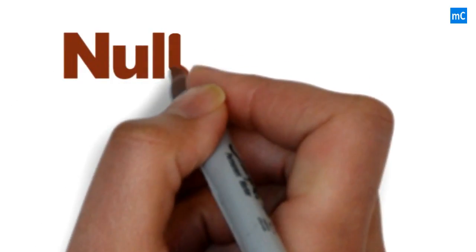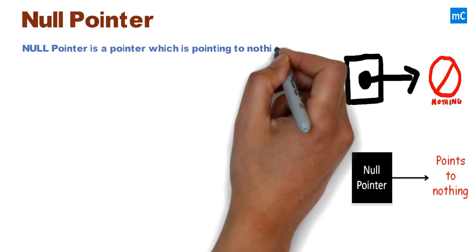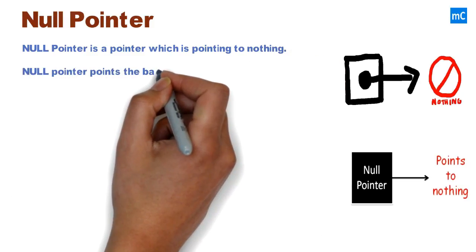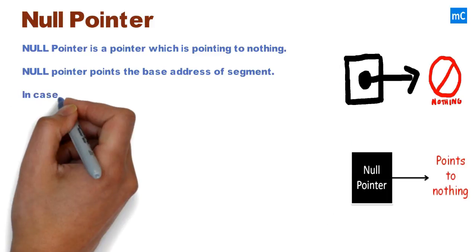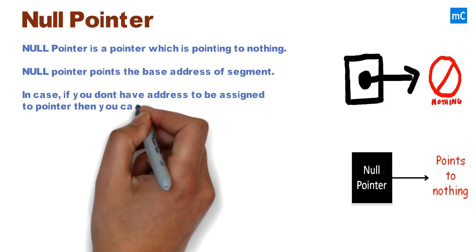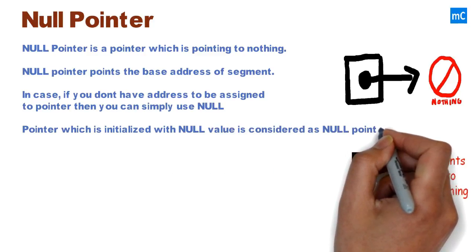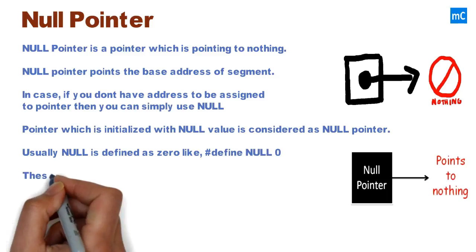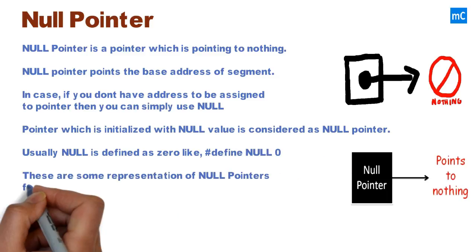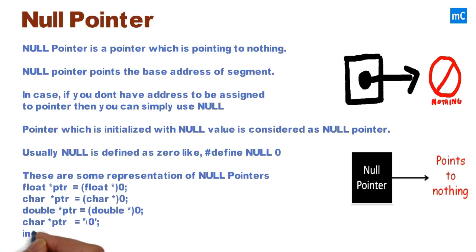First we will see null pointer. A null pointer is a pointer which is pointing to nothing. A null pointer points to the base address of the segment. In case you don't have an address to be assigned to a pointer, you can simply use a null pointer, which is initialized with a null value. Usually null is defined as zero — for example, #define NULL 0. These are some representations of null pointers.